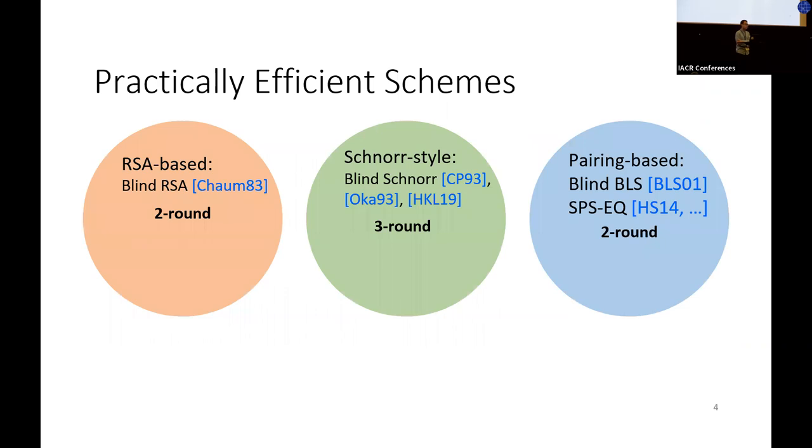The current practically efficient schemes fall into three classes: RSA-based schemes, Schnorr-style schemes, and pairing-based schemes. Schnorr-style schemes require three rounds for each signing, where the RSA-based and pairing-based schemes require only two rounds. However, both RSA and pairing-based schemes have some drawbacks.